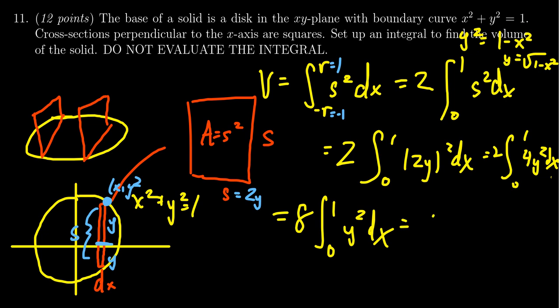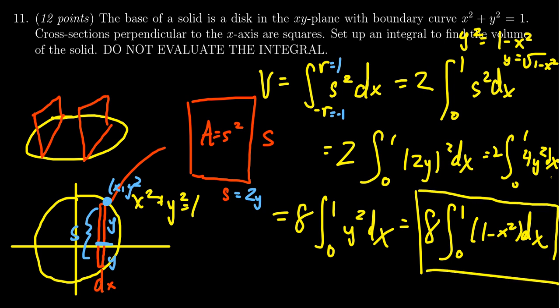So when you put that together, we're going to get eight times the integral from zero to one. The y squared becomes a one minus x squared dx. And therefore, this is the integral we're looking for. We don't have to evaluate it. Not that it's too hard to do, but the instructions say we don't have to evaluate it.